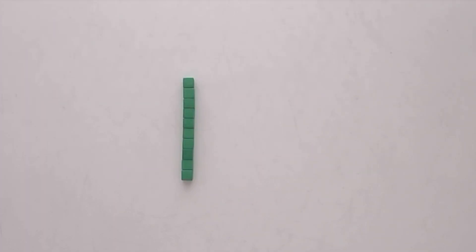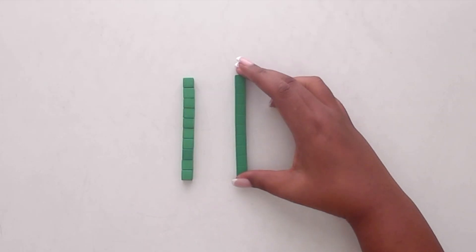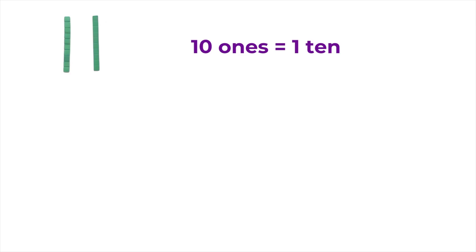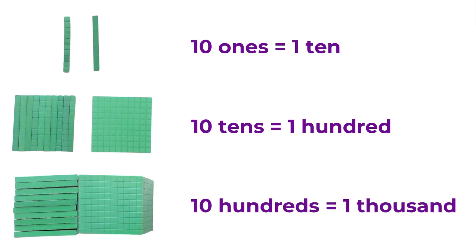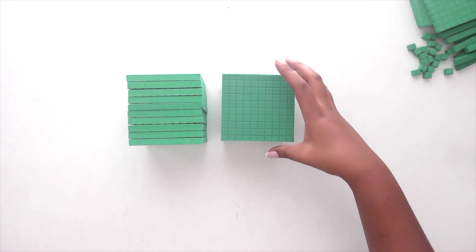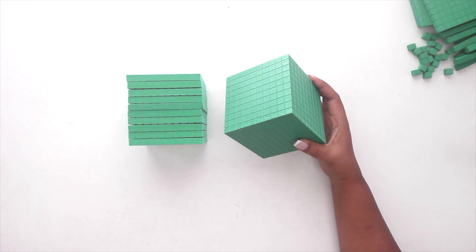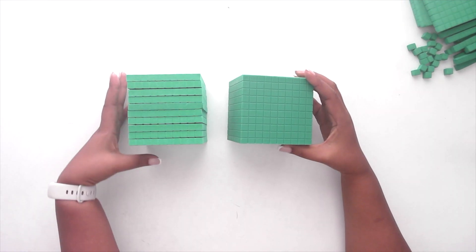Base 10 blocks also help students notice that numbers are built from groups of 10. 10 ones make a 10, 10 tens make a hundred, and 10 hundreds make a thousand. This grouping can work in reverse too, breaking a larger block into smaller ones.